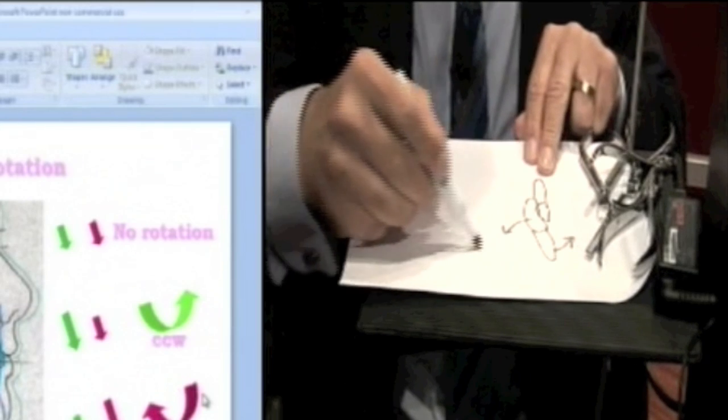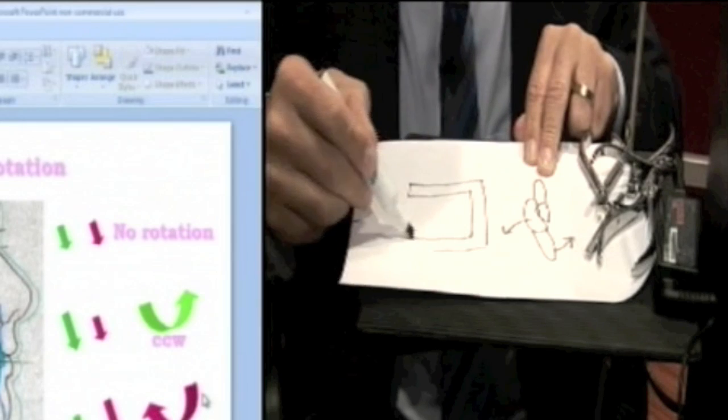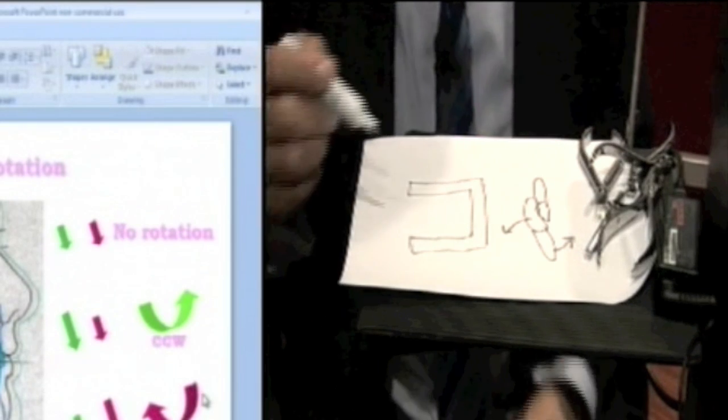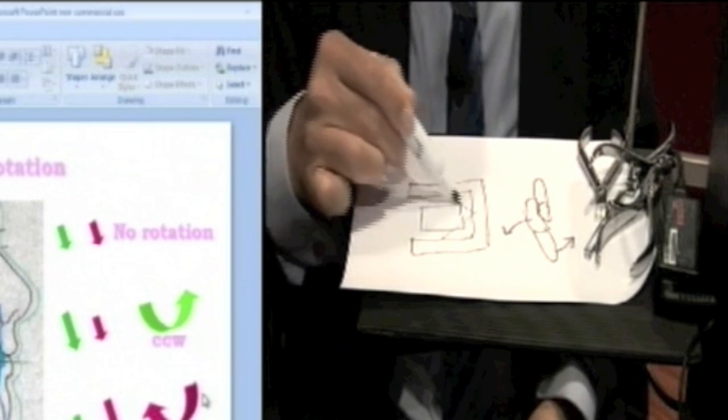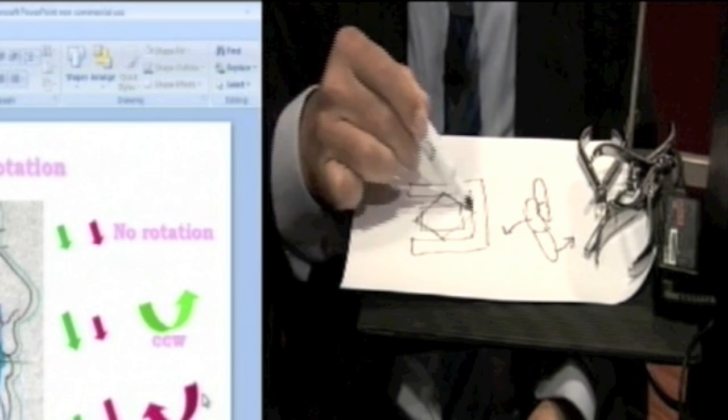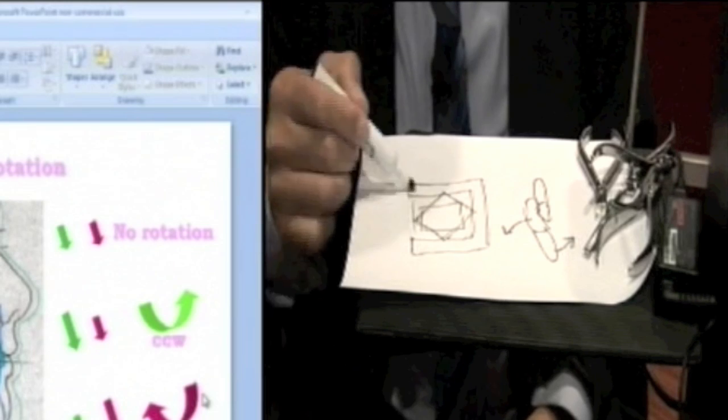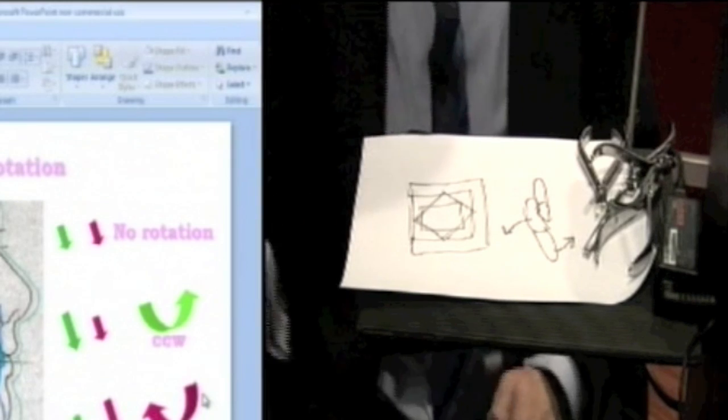So what it means is if this is your bracket, rather than the wire going in like this, the wire will now go in like that. And when the wire goes in like that and you close the gate, it's going to express the torque.